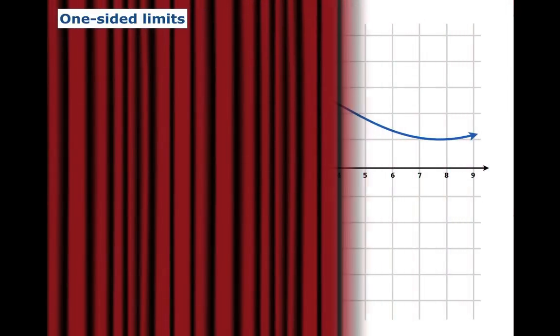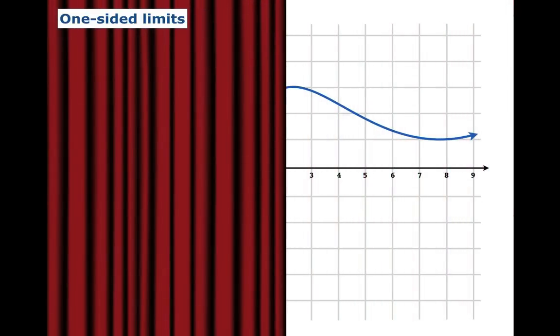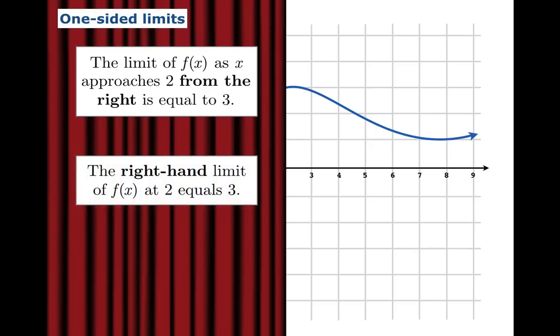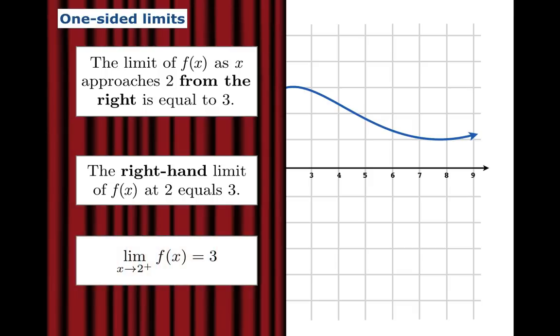And of course, you could pull the curtain in from the right side as well. So we'll play exactly the same game, but pulling it in from the other side. In this case, we would say the limit of f of x, as x approaches 2 from the right, is equal to 3. Or the right-hand limit of f at 2 equals 3.